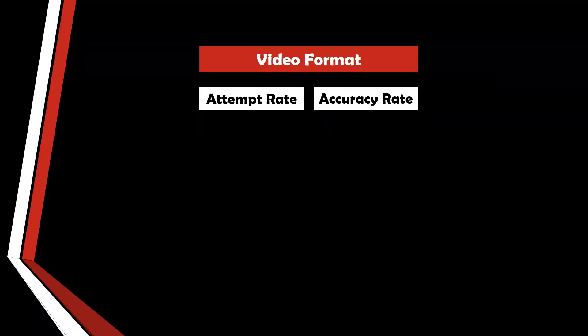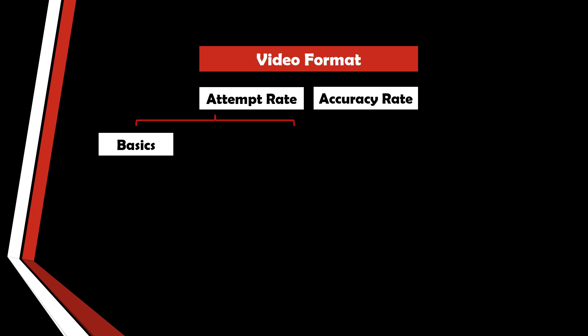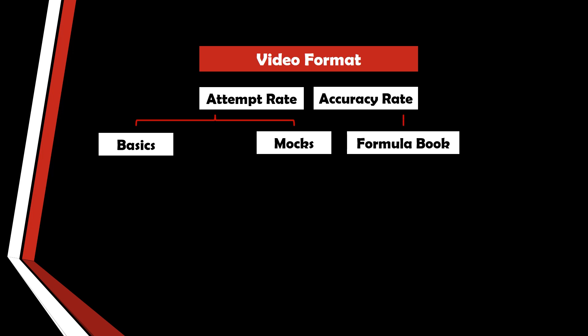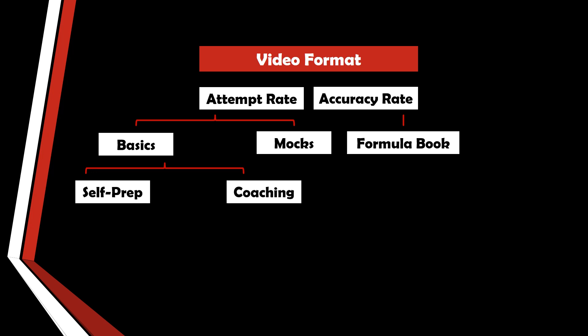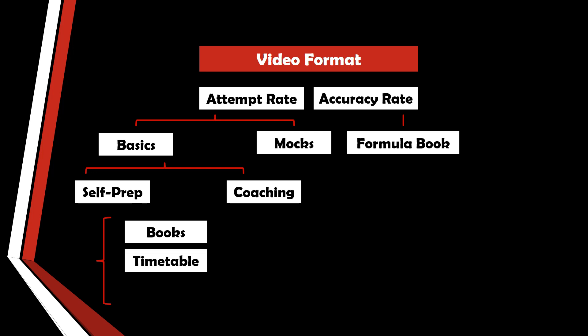I'll share how I improved both my attempt rate and accuracy rate. For attempt rate, I tried to finish my basics and also changed my mock attempt strategy. For accuracy rate, I maintained a formula book. Within the basics, I self-prepared for six months and then took coaching for a year. For self-preparation, I'll be talking about the books I used, the timetable I followed, and the process of preparation. So let's start with them one by one.